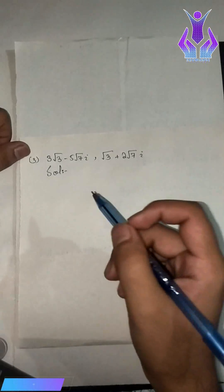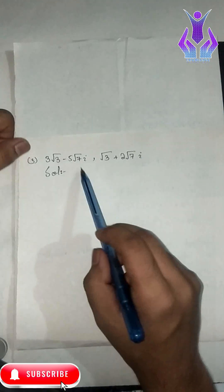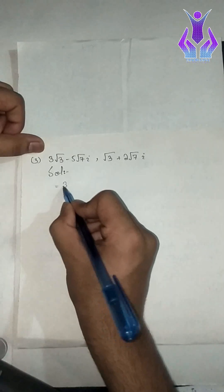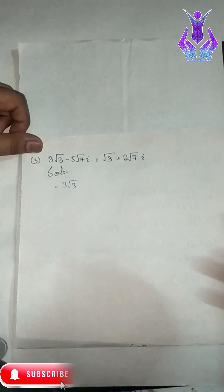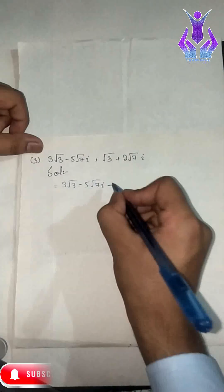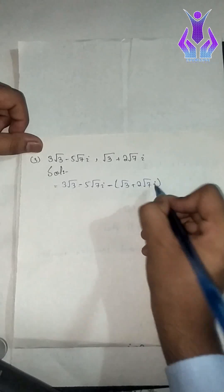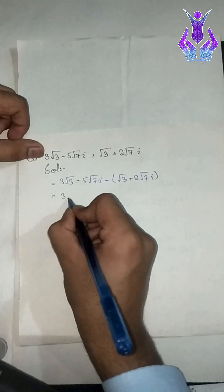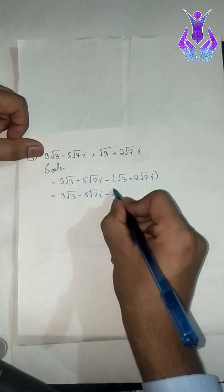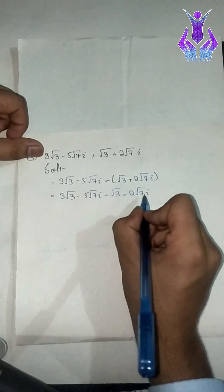Number four, last part: 3 under root 3 minus 5 under root 7 iota, minus, under root 3 plus 2 under root 7 iota. We apply the negative sign: under root 3, minus 5 under root 7 iota, minus under root 3, minus into plus gives minus 2 under root 7 iota. So: 3 under root 3 minus 5 under root 7 iota, minus 2 under root 7 iota. Real and imaginary parts.